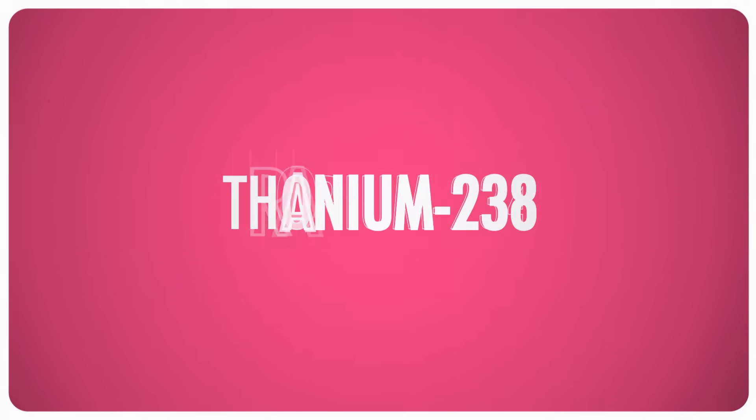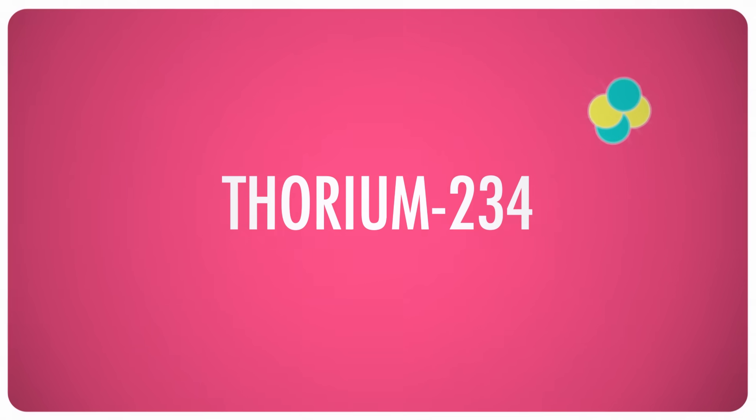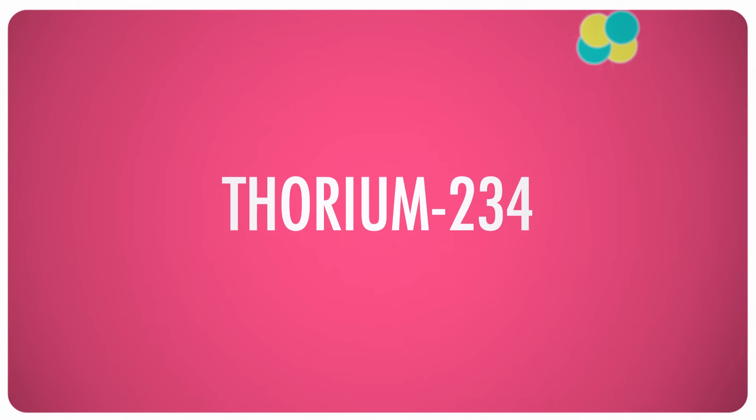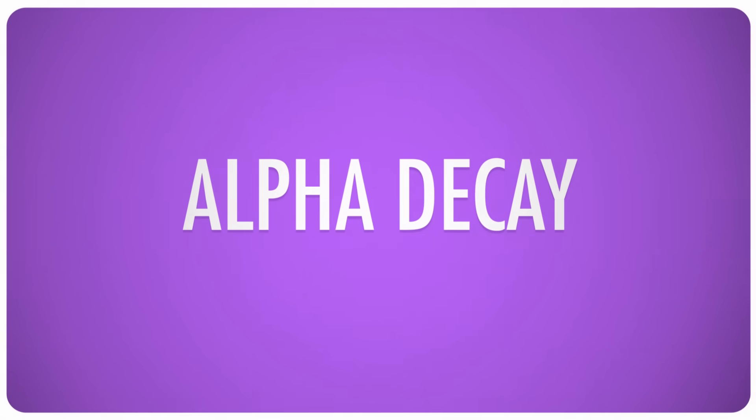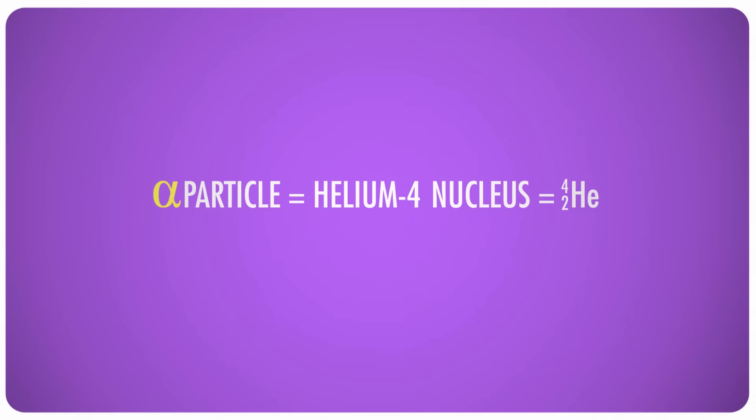U-238 spontaneously decays into thorium-234 in a process that releases something called an alpha particle. This is called alpha decay, and the particle that it emits is basically the same as a helium nucleus, two protons and two neutrons. We even describe it that way when writing it.